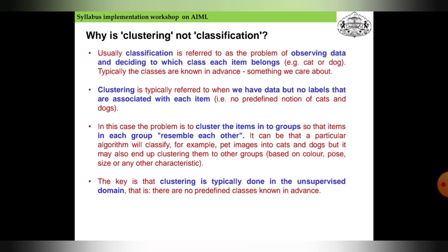In clustering, the problem is to cluster items into groups so that items in each group resemble each other. A particular algorithm might classify pet images into cats and dogs, but it may also end up clustering them into other groups based on color, pose, size, and other characteristics. The key is that clustering is typically done in the unsupervised domain.